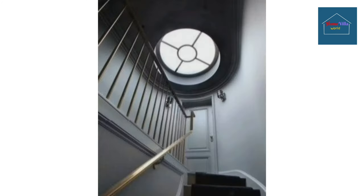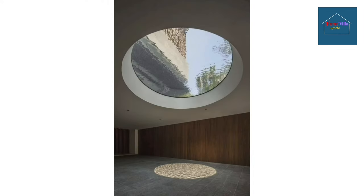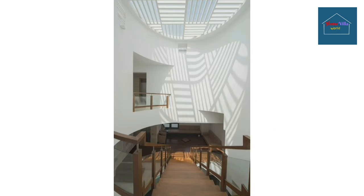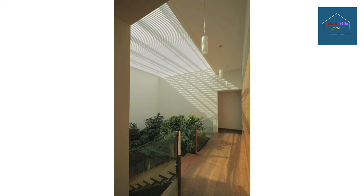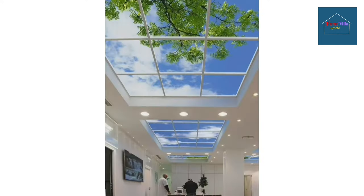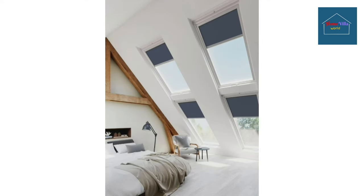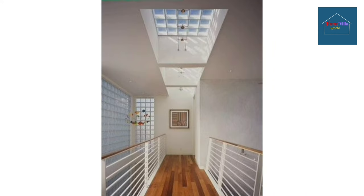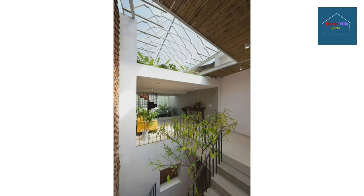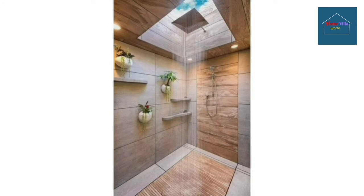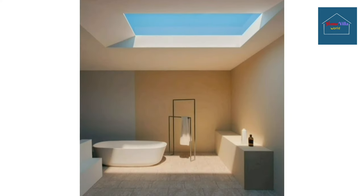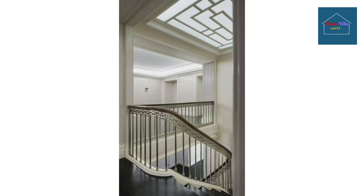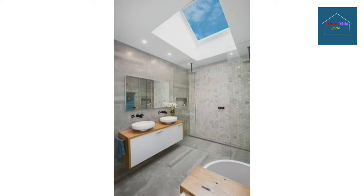Vented skylights are basically the addition of a window on your roof. These come with motorized systems and can open in different ways — top-hung, bottom-hung, side-hung, pivot, or sliding — to further the circulation of air within the room. Vented roof lights are perfect for areas that get too damp or have no windows. A ventilating skylight also has other practical benefits: aside from being a source of natural light, it provides additional ventilation by allowing air into a house. This type of skylight can be opened and is essentially similar to a window, but installed in the roof of your house.